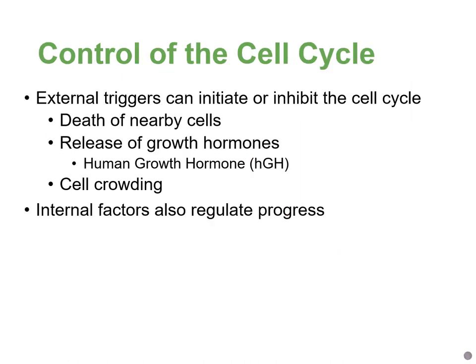Besides those three checkpoints, there are other things that can affect the cell cycle. Some are external — for example, the death of nearby cells can signal that cells need to divide to replace them. In adult tissues, the death rate should equal the cell division rate to keep cell numbers stable. Certain hormones like human growth hormone can promote the cell cycle. And if there are too many cells, carbohydrate structures on the cell surface can send signals telling the cell to stop dividing because there's no space.